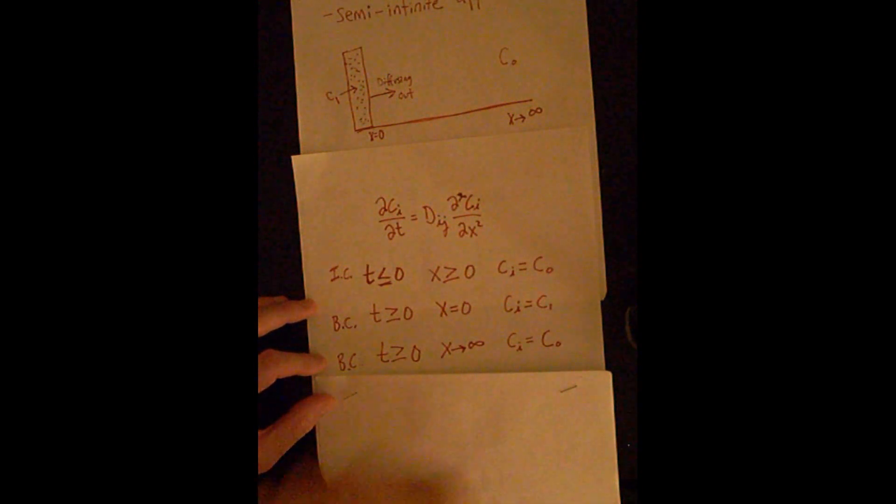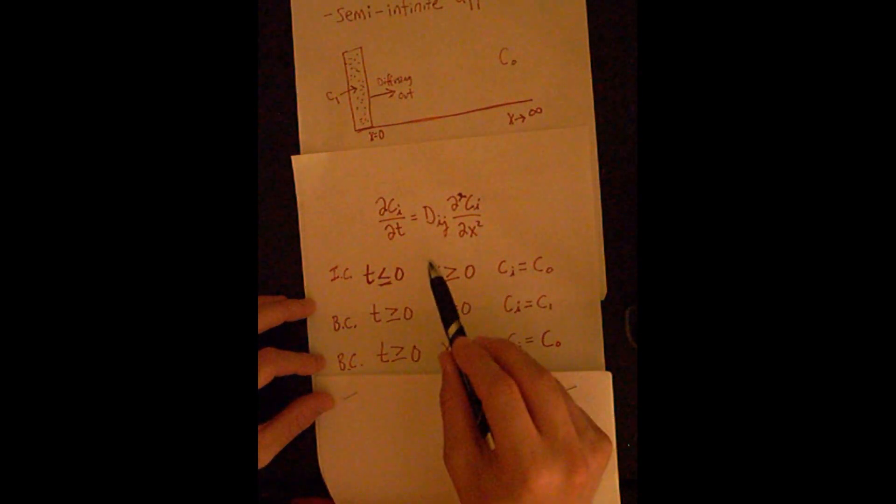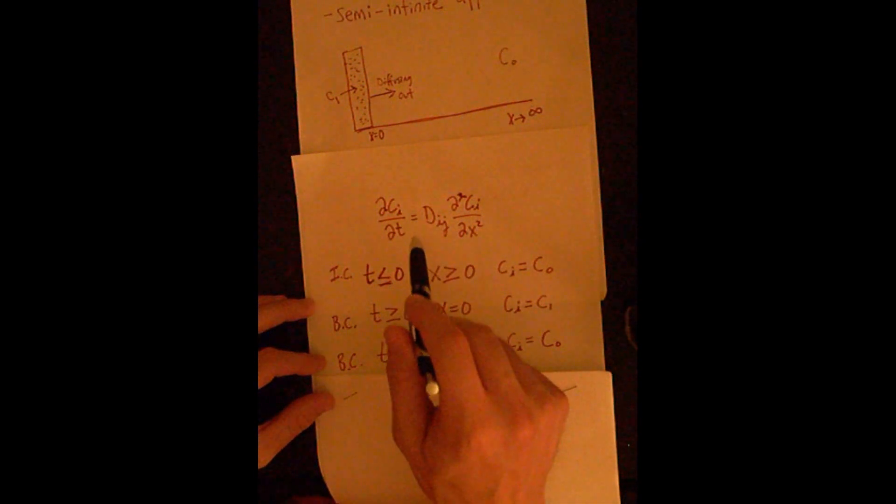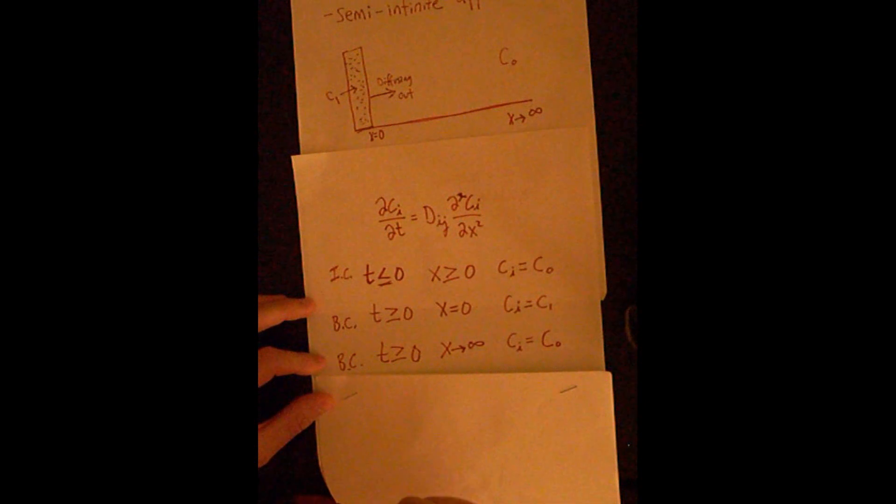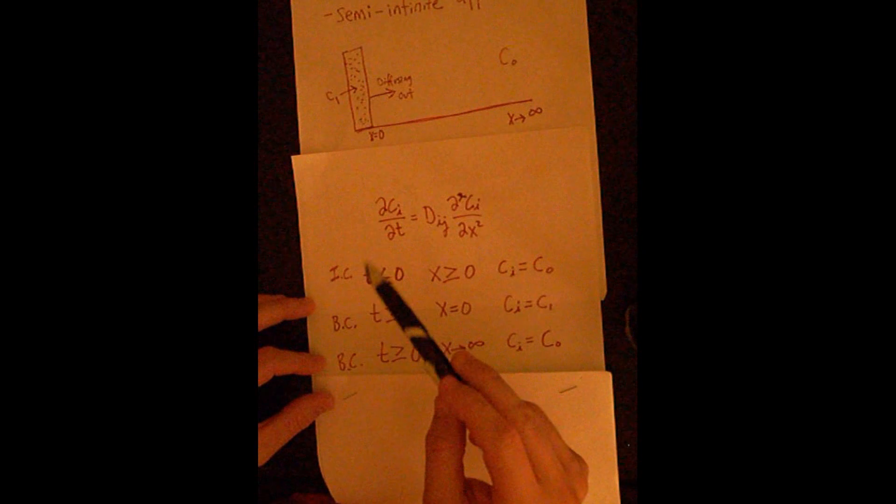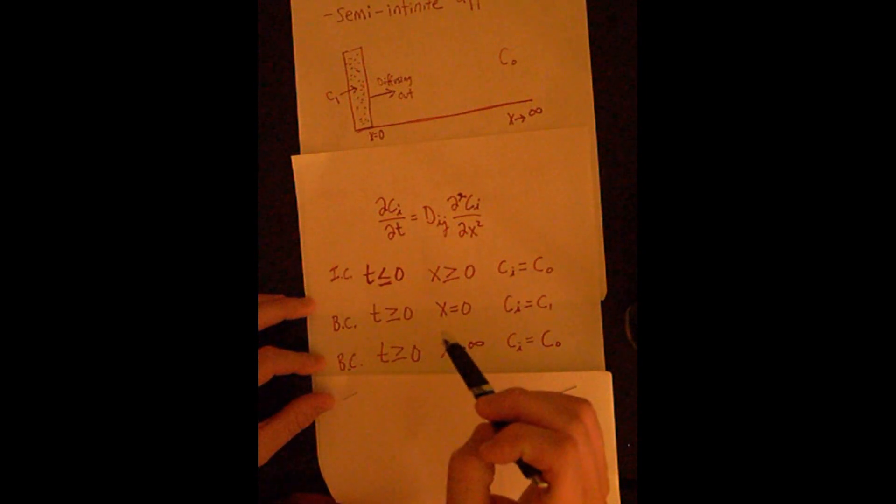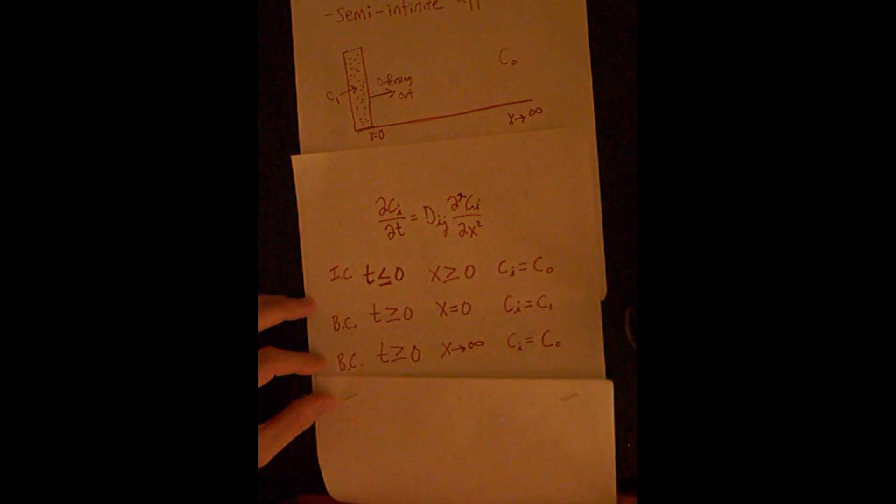Since this is a partial differential equation, it's a bit tougher to solve than ordinary differential equations. So one way we can look at this and make this a bit easier to solve is to transform this partial differential equation into an ordinary differential equation. One way we can do that is to look at these terms and put concentration, time, and position into non-dimensionalized terms using dimensionless variables.